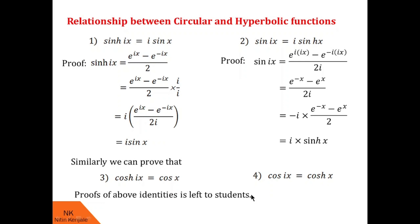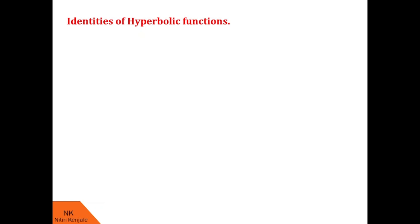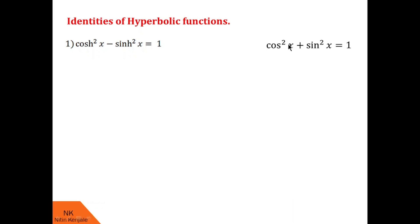Now let us proceed with some identities of hyperbolic functions. I am going to show you the corresponding circular function identity simultaneously. The first identity is cosh²x minus sinh²x equals 1. The similar identity for circular functions is cos²x plus sin²x equals 1. There is a sign difference between these two identities.